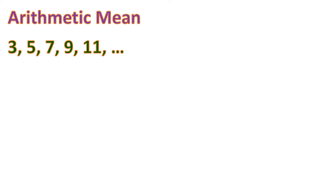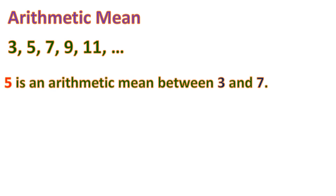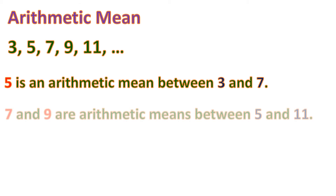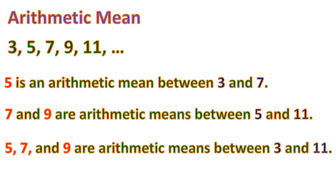Now let's talk about arithmetic mean. This refers to the number or numbers in between terms of an arithmetic sequence. For example, in the sequence 3, 5, 7, 9, 11 with common difference 2: 5 is the arithmetic mean between 3 and 7; 7 and 9 are arithmetic means between 5 and 11; and 5, 7, and 9 are arithmetic means between 3 and 11. Any numbers in between two terms of a sequence can be referred to as arithmetic means.